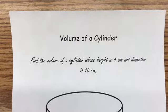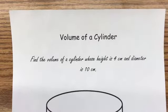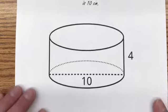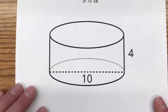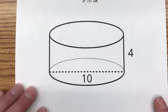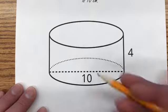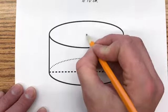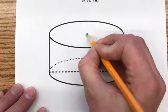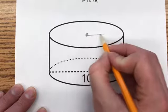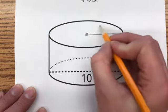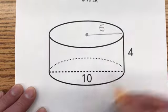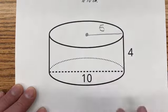Find the volume of a cylinder whose height is 4 centimeters and diameter is 10 centimeters. I don't care about the diameter too much — I care about the radius. Remember, radius is half of diameter, so half of 10 is 5.